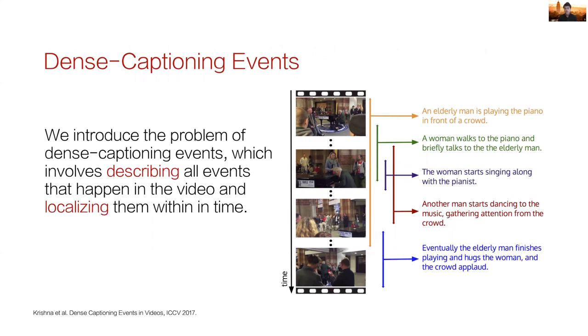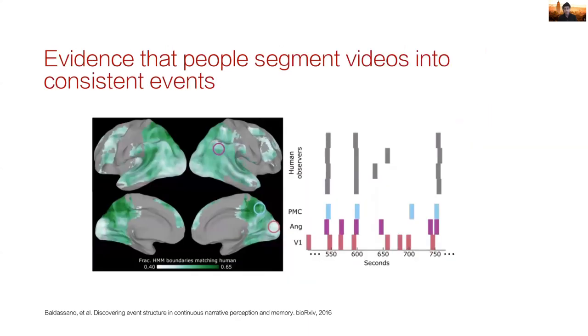In order to capture and reason about the complex and often co-occurring events in a video, we introduced the task of dense captioning events and videos in 2017. Given a video, the task involved two steps: localizing events in time and describing them in language. Our task was motivated by findings in neuroscience which found that people tend to segment videos into consistent groups or segments, implying that there is a commonly accepted beginning and end to events.